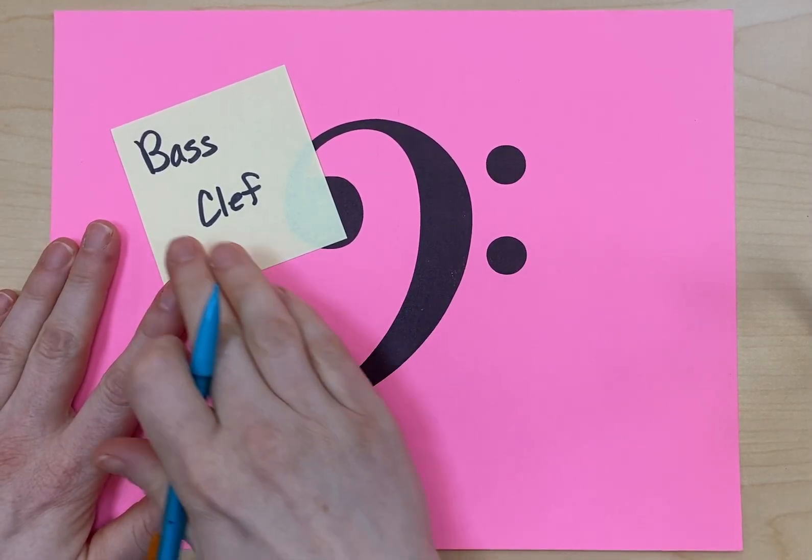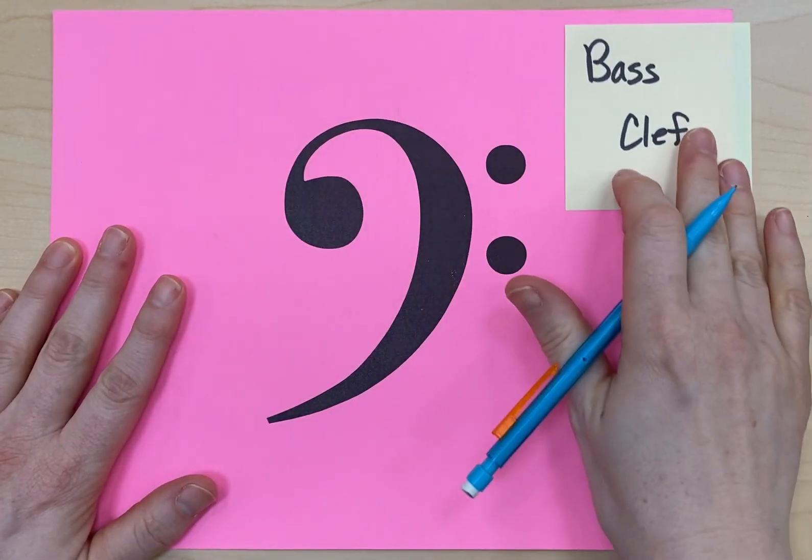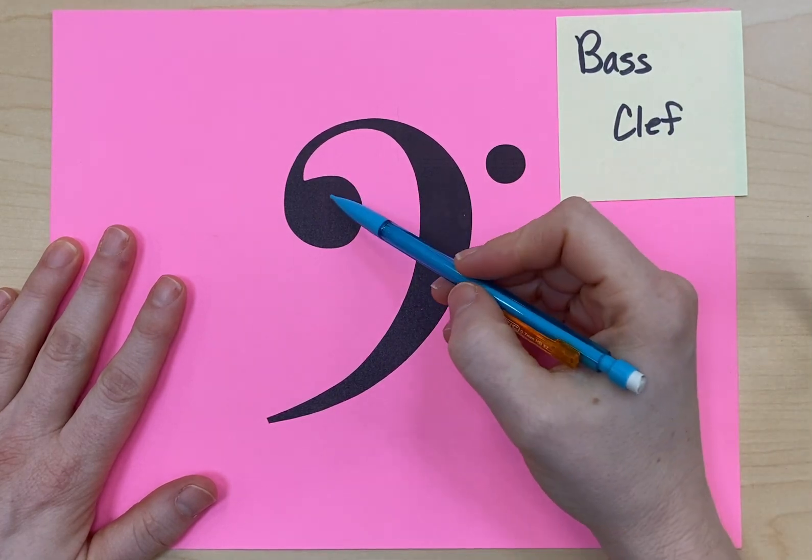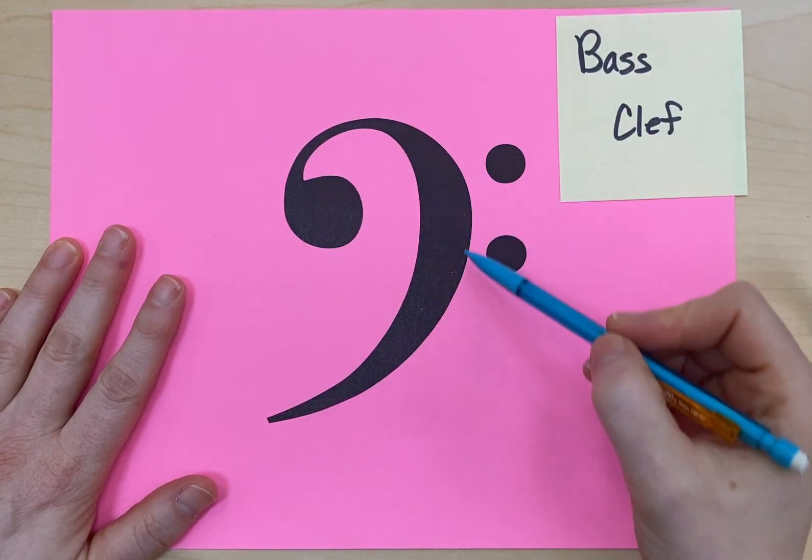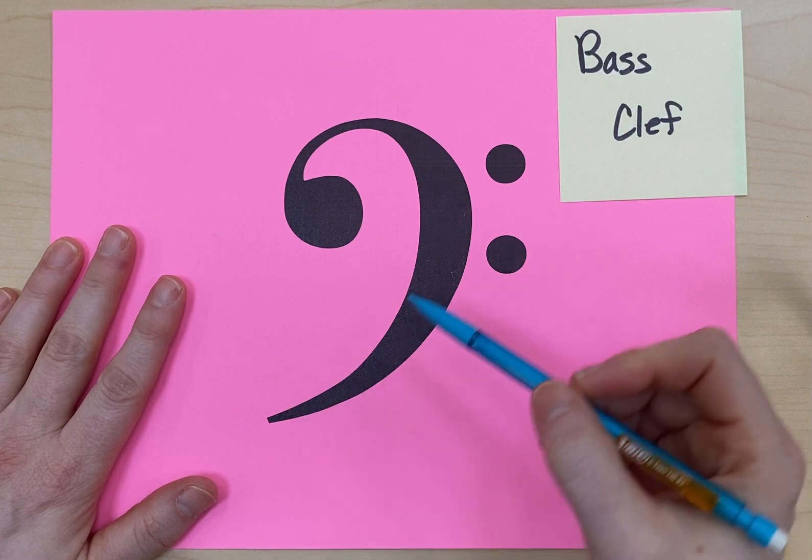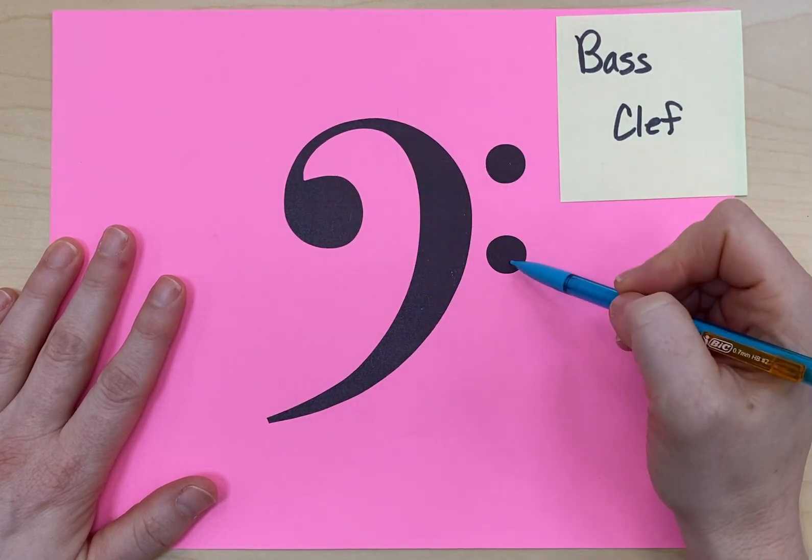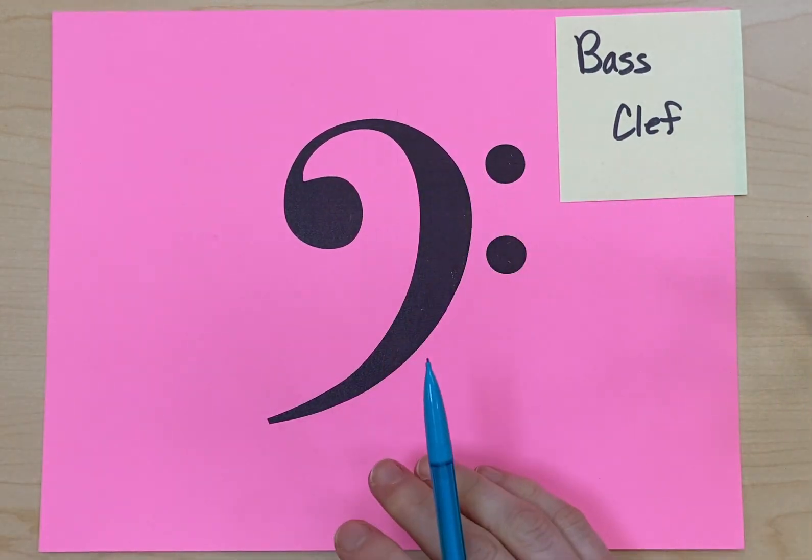We're going to learn how to draw the bass clef. The bass clef looks like this. It has this ball with like an ear-shaped thing on it or half of a heart, and then two dots. So that's the bass clef.